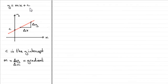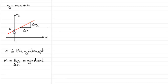Recall that if you have an equation of the form y equals mx plus c, where m and c are constants, and you plot y against x, you get a straight line graph. The constant c is the y-intercept because when x is 0, y equals c. And m is the gradient — take any two points on the line, work out the difference in y over the difference in x, and you get the gradient m.